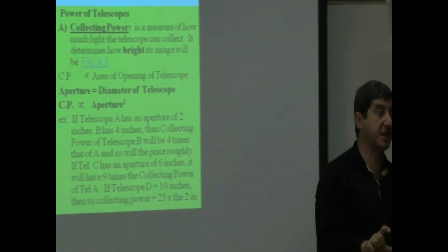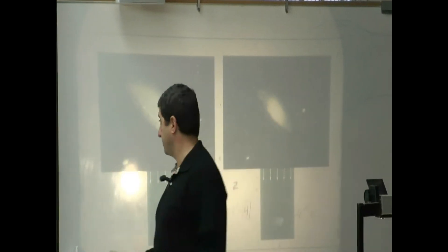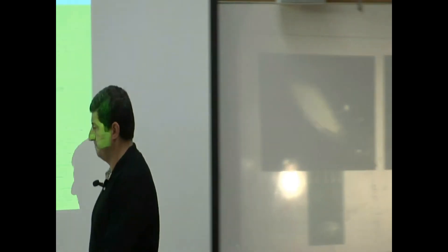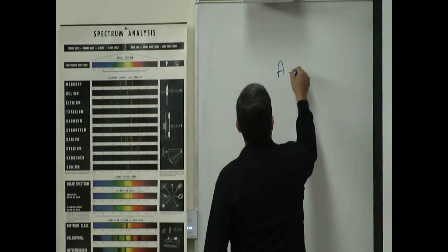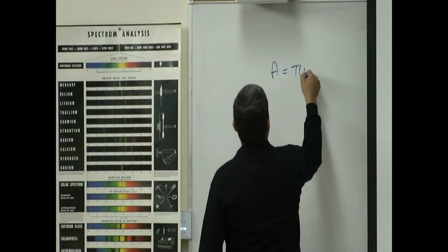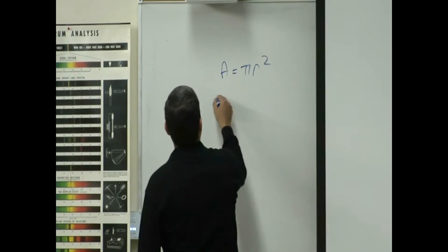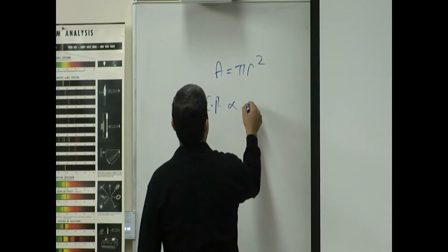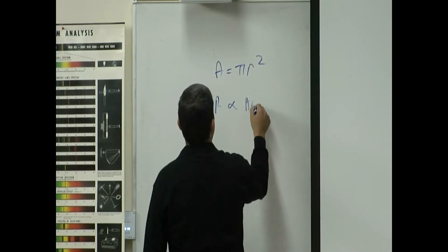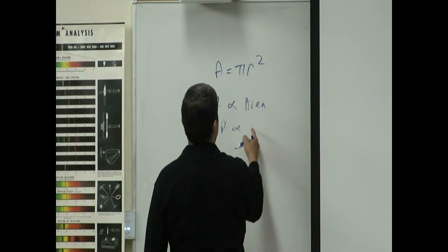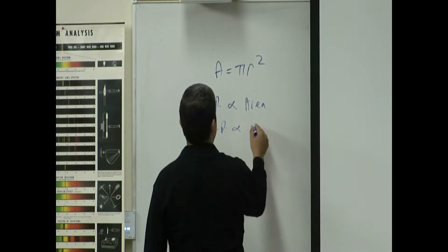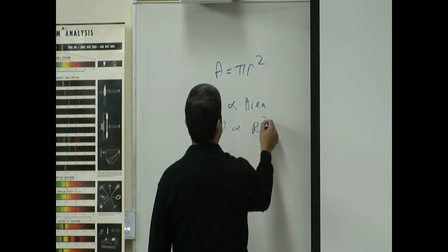Why? Because the surface area of a circle is equal to pi times radius squared. Since the collecting power is proportional to the area, and the area is proportional to radius squared, that means the collecting power is proportional to radius squared.